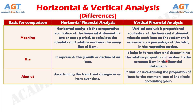Number 3. The primary aim of horizontal analysis is to keep track of the behavior of individual items of the financial statement over the years. Whereas, vertical analysis aims at showing an insight into the relative importance or proportion of various items on a particular year's financial statement.